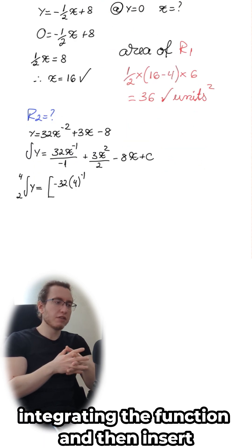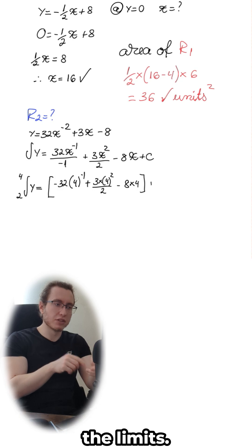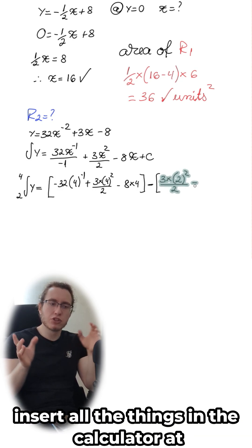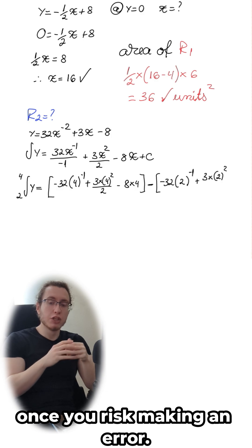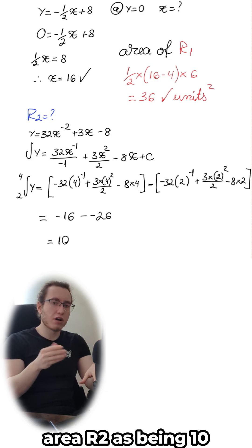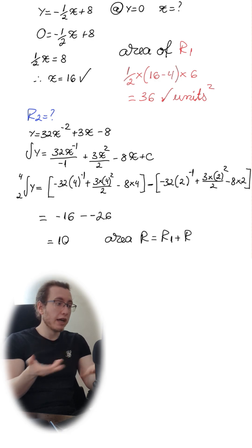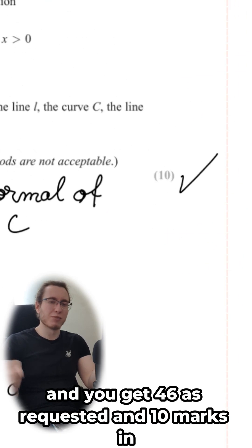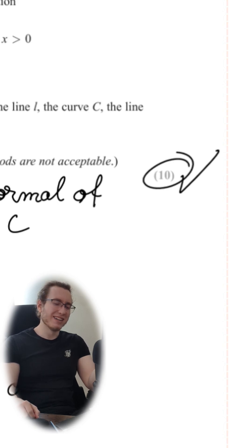Integrating the function and then insert the limits. Word of warning: just do each limit one at a time, as if you insert all the things in the calculator at once you risk making an error. Happens more often than you want. Numbers in, you get the area R2 as being 10, and then add it up and you get 46 as requested. And 10 marks in the bag.